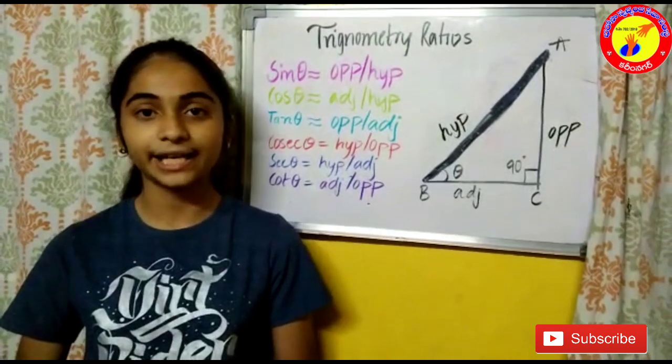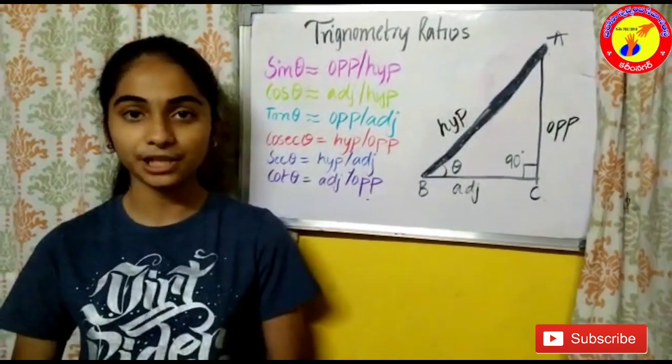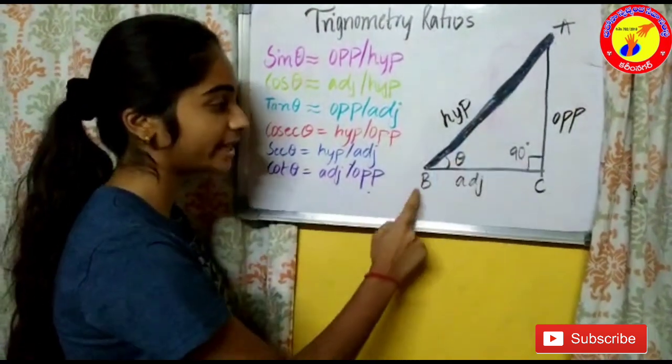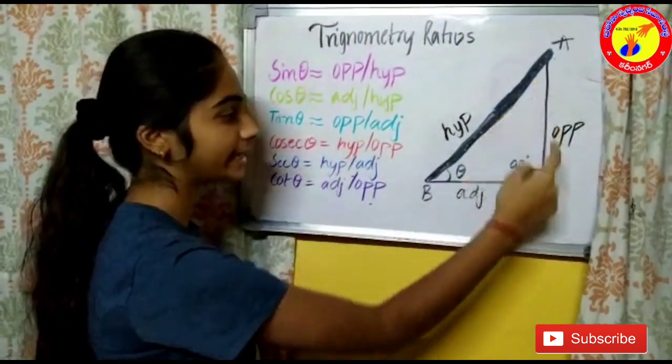My name is Asmi, class 10 student studying in All Fours. Today I'm going to explain trigonometric ratios in a right angle triangle. If theta is at B, then AB is called the hypotenuse, BC is adjacent, and AC is opposite.